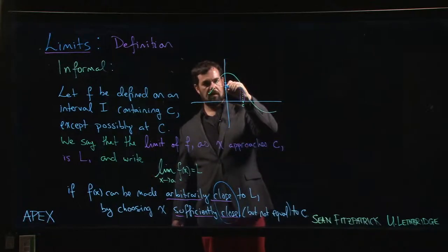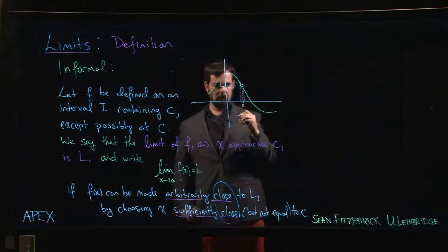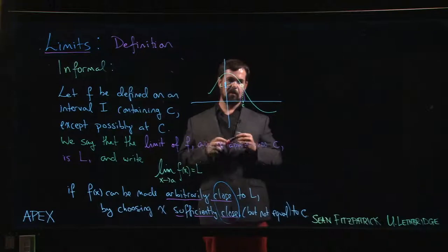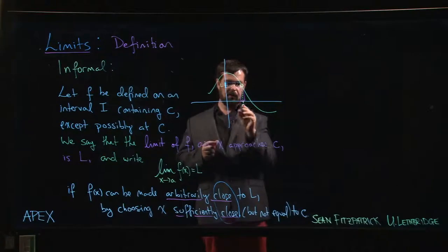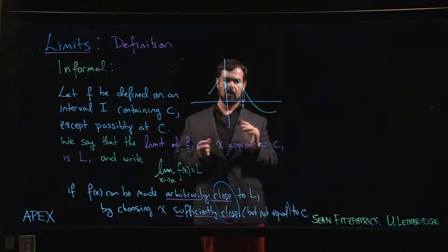You get a corresponding range for the x values. If I want my y values, if I want f(x) to be in this range here on either side of the limit L, then I need to make sure that my x values come from this little range here, this little interval around C.